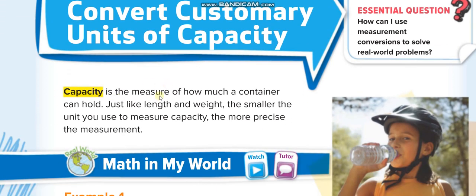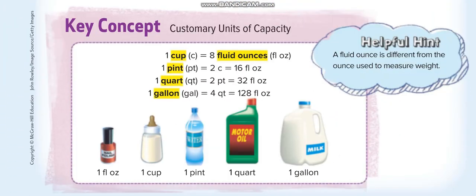First, understand this: capacity is the measure of how much a container can hold. Just like length — how long something is — and weight — how heavy something is — capacity tells you how much a container can hold. You can think of it as liquid, like how much water this bottle can hold.